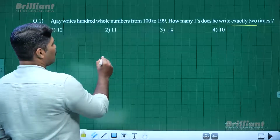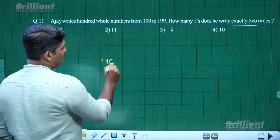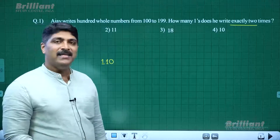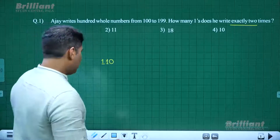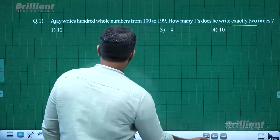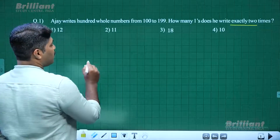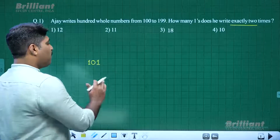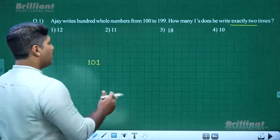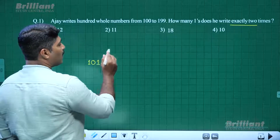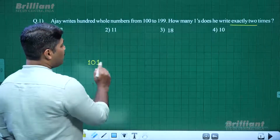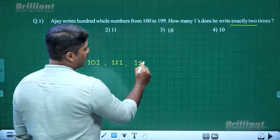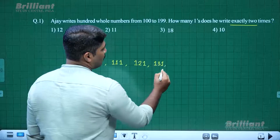Which is the first number from 100 to 199 containing exactly two ones? The first such number is 101 (not 110). Starting from 101, the next numbers in that pattern are 110, 111, 121, 131, and so on up to 191.